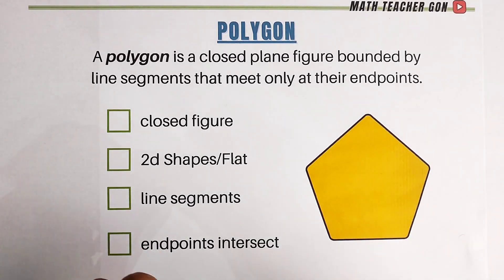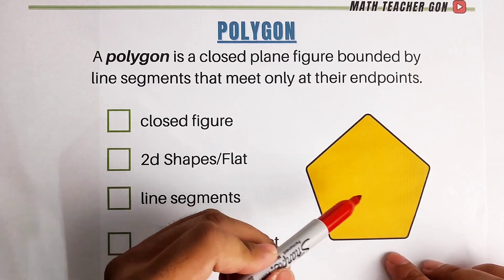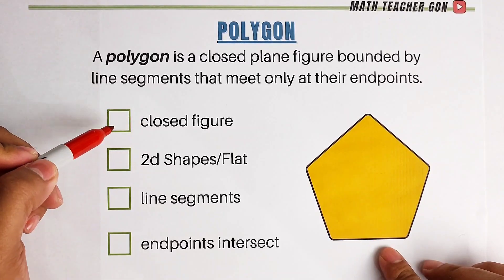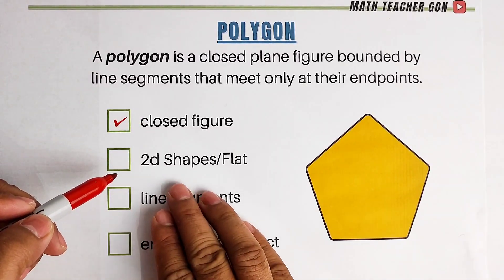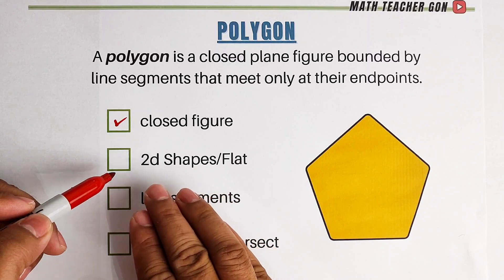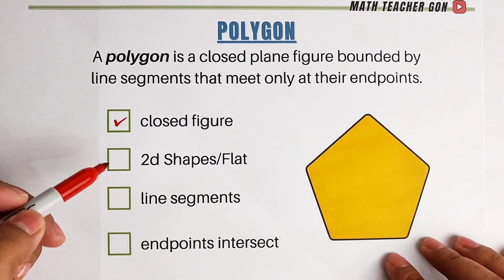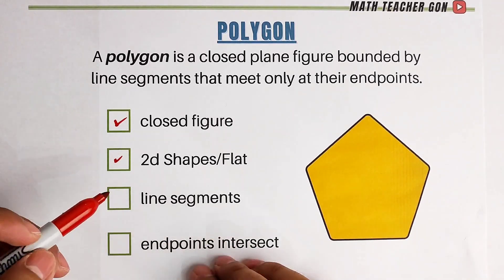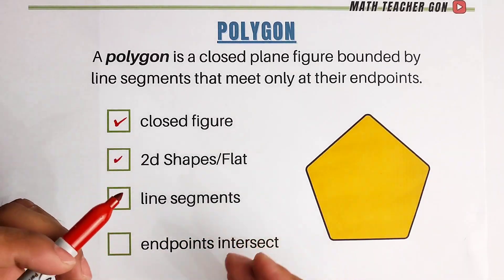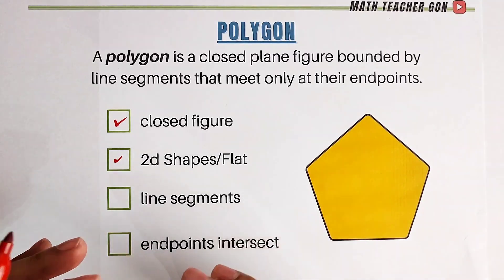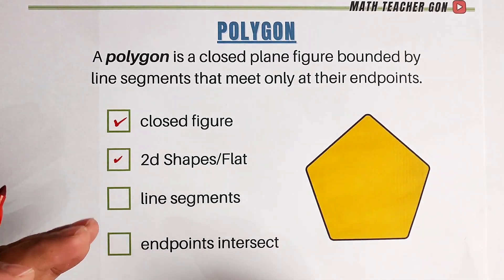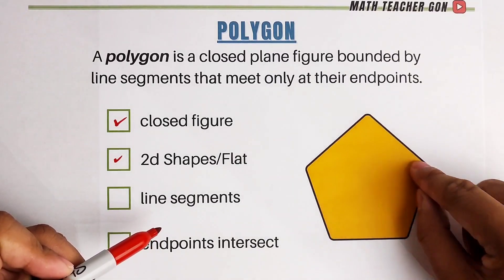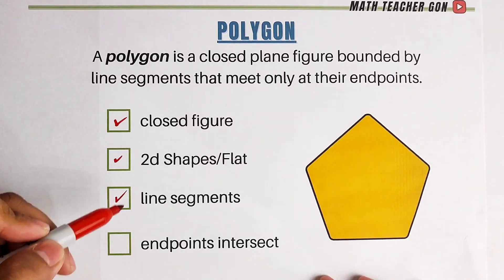So first, let us examine this given figure. By the way, it has five sides. Is this a closed figure? Yes. Is this figure two-dimensional or flat? Is this a flat surface? Yes. What about line segments? Is it composed of line segments? When we say line segments, to be clear, it is a straight line. If there's a curve in the given shape, that is not considered a line segment. So here, all of the lines here are straight lines, so we will put a check here.